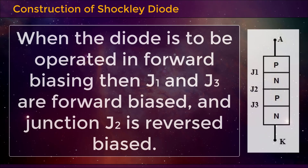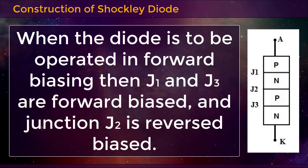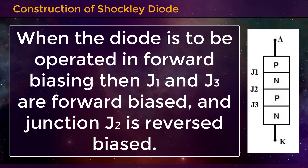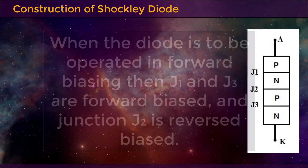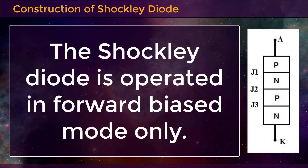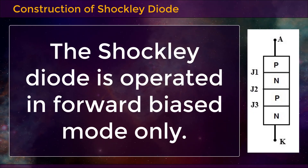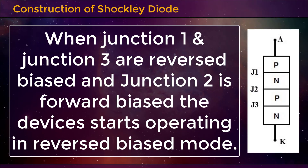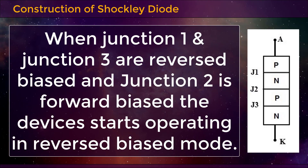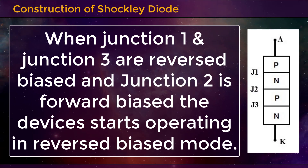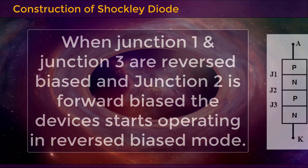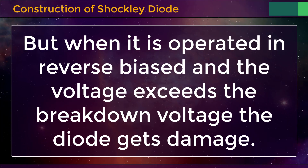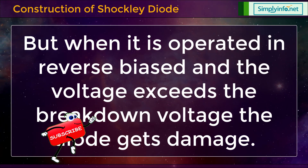When the diode is operated in forward biasing, J1 and J3 are forward biased and junction J2 is reverse biased. The Shockley Diode is operated in forward biased mode only. When junction 1 and junction 3 are reverse biased and junction 2 is forward biased, the device starts operating in reverse biased mode. But when operated in reverse biased mode and the voltage exceeds the breakdown voltage, the diode gets damaged.